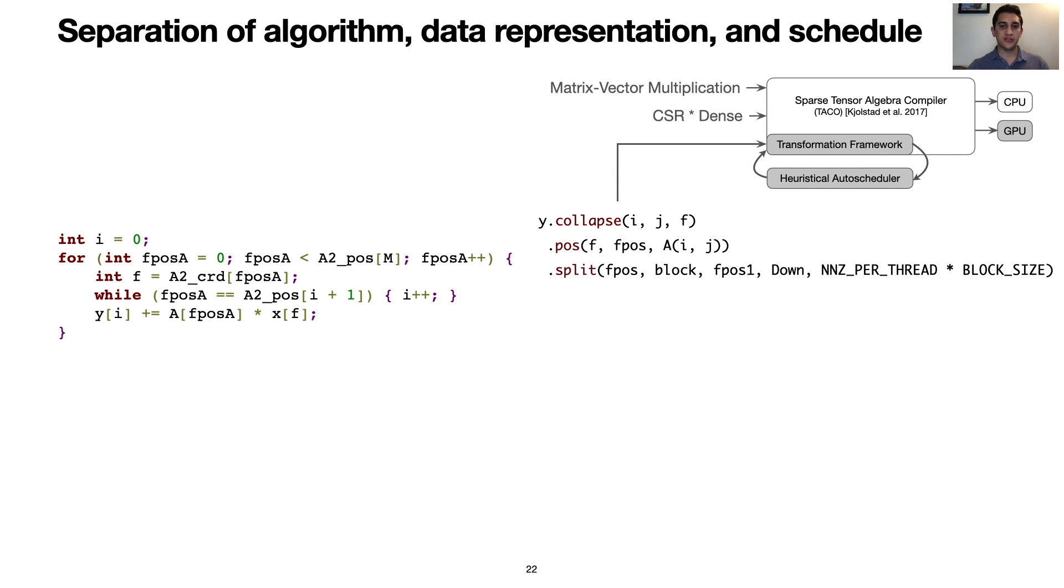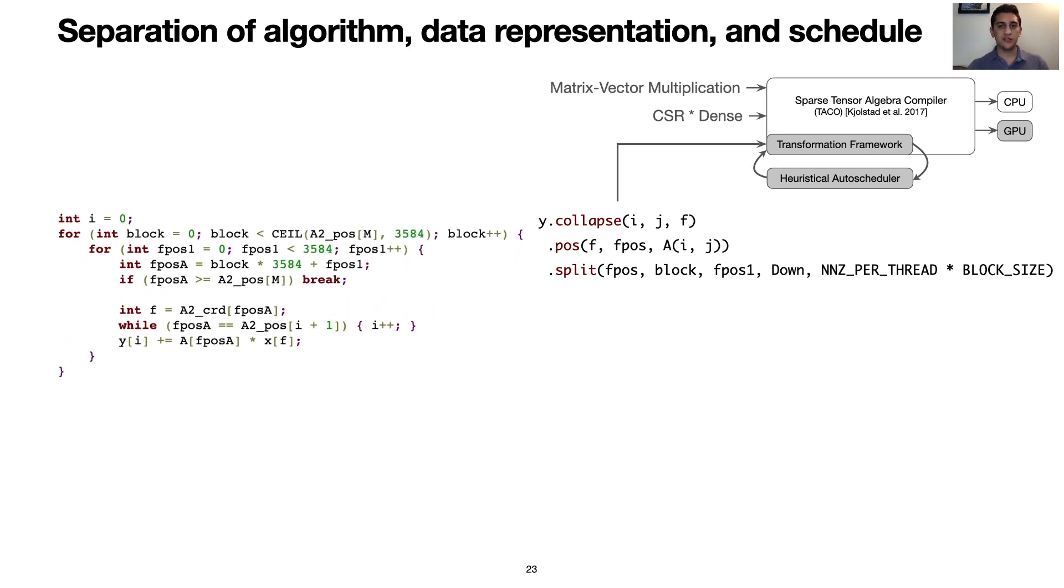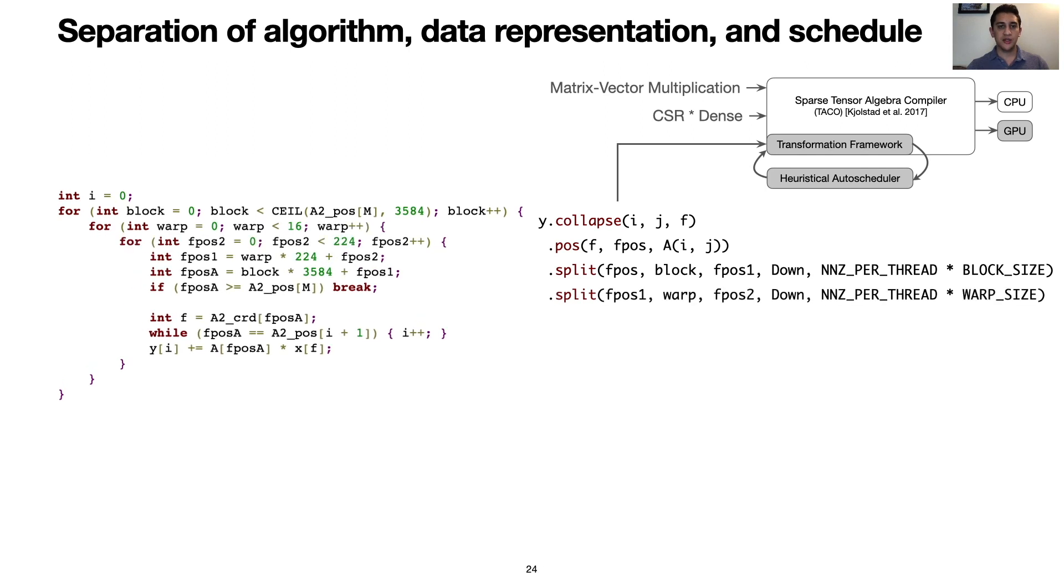We can now strip mine the sparse loop, such that each iteration has the same number of non-zeros of the A matrix. We start with blocks and continue the strip mine for warps and threads. Note that NNZ per thread and block size are compile time constants. Notice how creating this hierarchical parallelism is done generally, and these transformations could easily be applied to other parallel hardware.